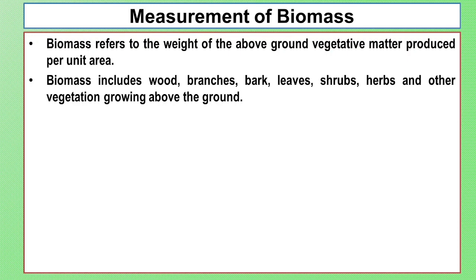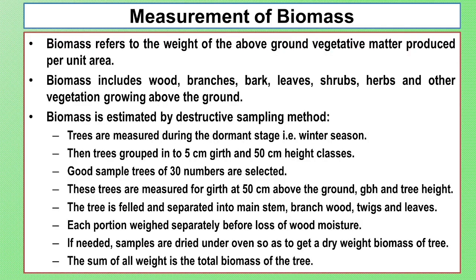Biomass is estimated using the destructive sampling method. Trees are measured mainly in the winter season when they are in a dormant state. Trees are grouped into five-centimeter girth and 50-centimeter height classes. Sample trees of 13 numbers are selected. These trees are measured for girth at 50 centimeters above the ground, girth at breast height, and tree height. Then the trees are felled, and the main stem, branches, twigs, and leaves are separated. Samples are dried in an oven to obtain the dry weight of biomass.